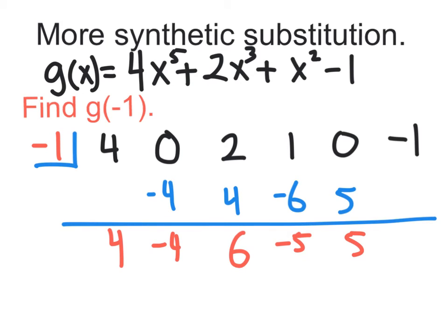0 and 5 is 5. And now, finally, right here we need to put that line right there. And finally, negative 1 times 5 is negative 5.